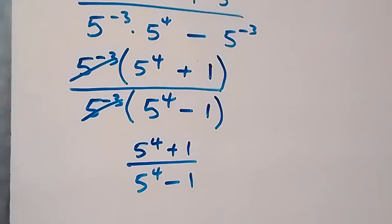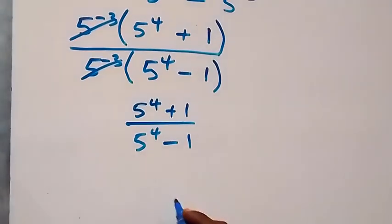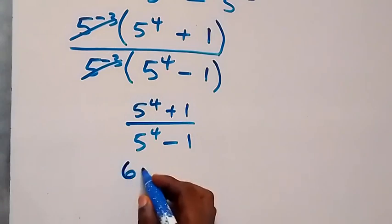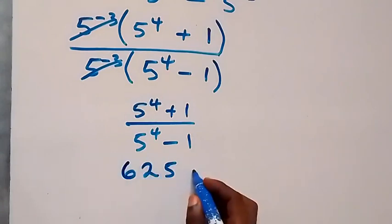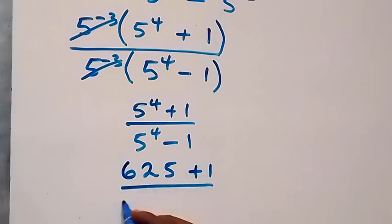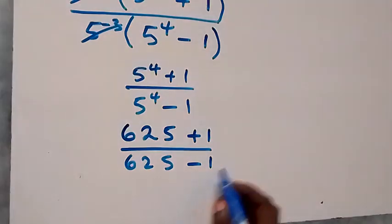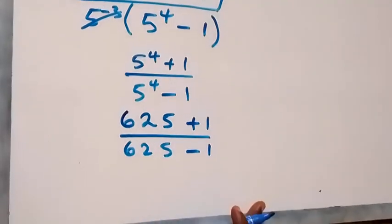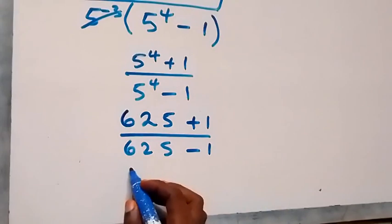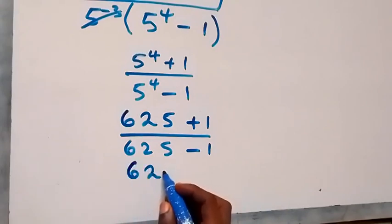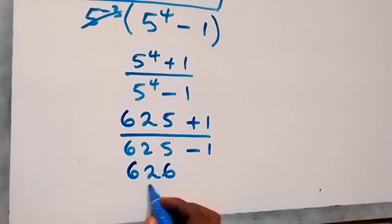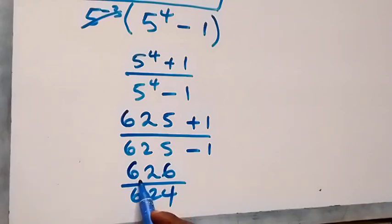5 raised to power 4 simply means 5 times 5 times 5 times 5, which equals 625. So we have 625 plus 1 over 625 minus 1, which gives us 626 over 624.